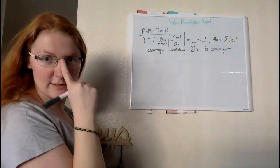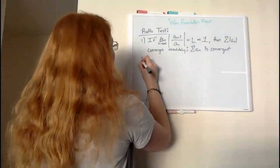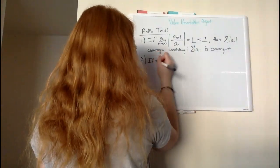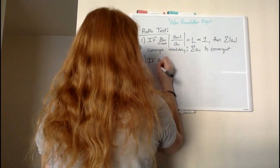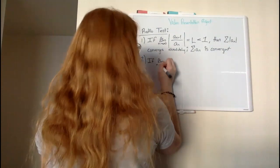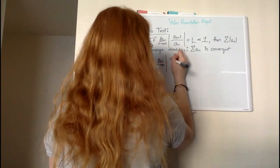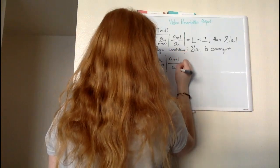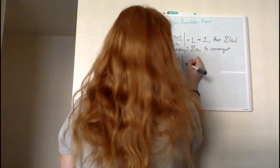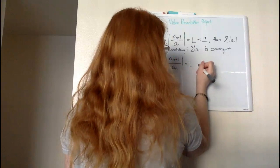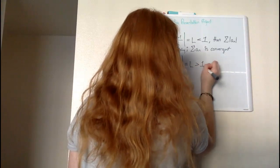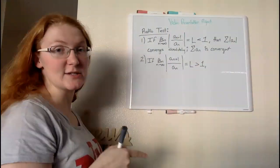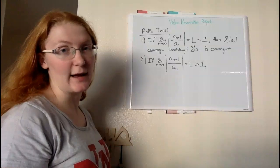Now we have our second rule. The second rule states that if our limit as n approaches infinity of the absolute value of our series plus one all over our series is equal to a value L that is greater than one, then by the ratio test that series is going to diverge.